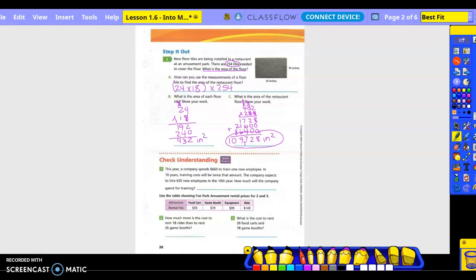Check understanding. Number 1. This year, the company spends $660 to train new employees. In 10 years, training costs will be twice that amount. The company expects to hire 635 new employees in the 10th year. How much will the company spend for training? So right now they're doing 660. And 10 years is going to be double, twice that amount of the 660. And then they expect to hire 635 new employees. So what do I need to do first? 660 times 2. I need to do parentheses times 635 equals.